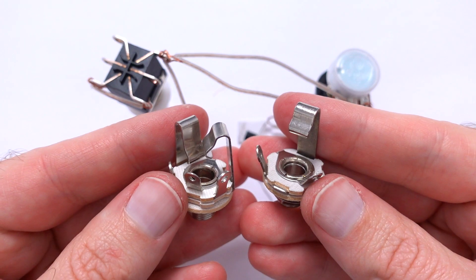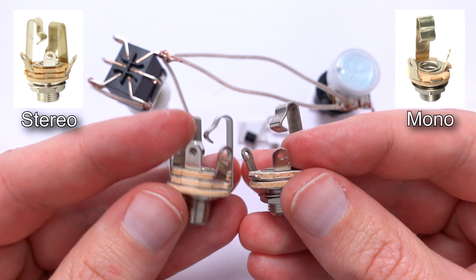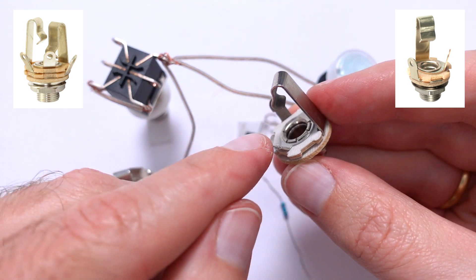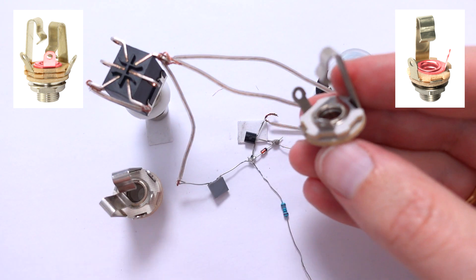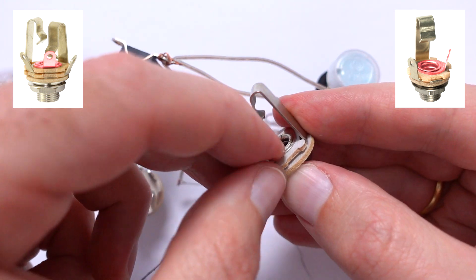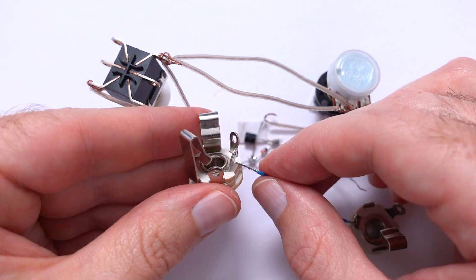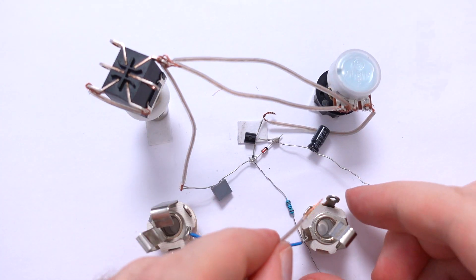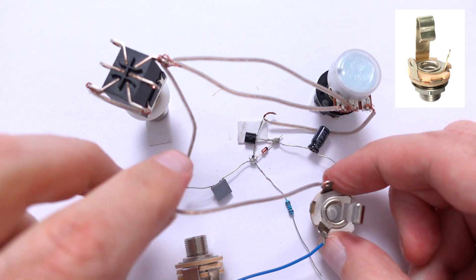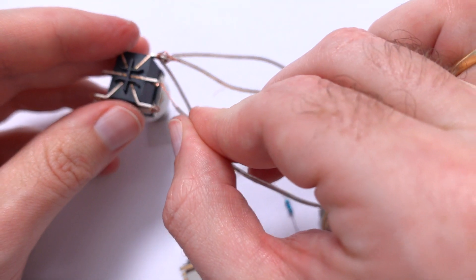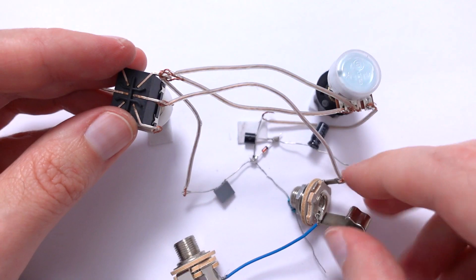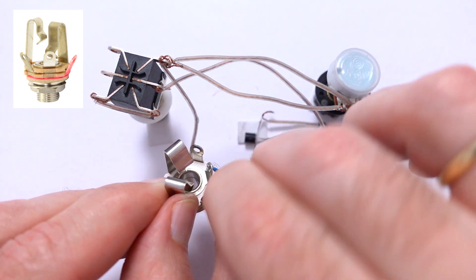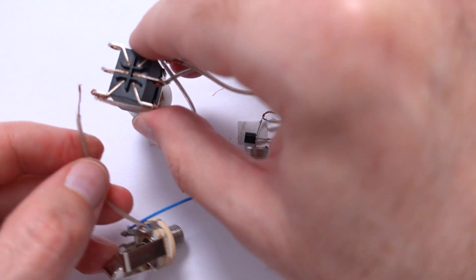Now we need two jacks, stereo for input and mono for output. Connect inner or upper lug of mono jack to the same inner or upper lug of stereo jack. Outer or lower lug of mono jack connect to the middle right pin of foot switch. And outer or lower lug of stereo jack connect to the middle left pin of foot switch.